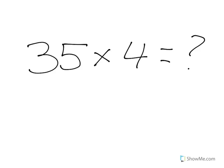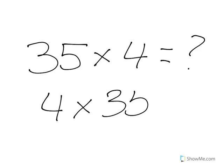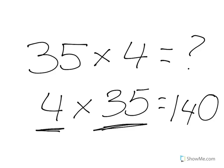So for example, if we have 35 times 4, we can say we have 35 groups and we have 4 pieces in each group. Or we can also write that as 4 times 35, which means that we have 4 groups and 35 pieces in each group. Either way, when we multiply that together, we're going to end up with 140 pieces.